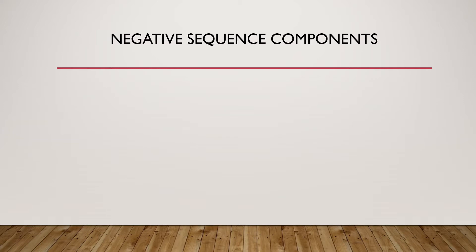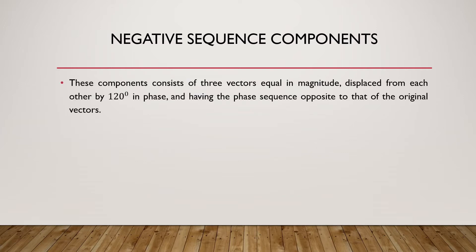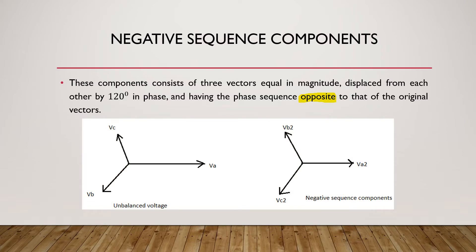Now let us discuss negative sequence components. The only difference between positive and negative sequence is the phase sequence. These components consist of three vectors equal in magnitude, displaced from each other by 120°, but the phase sequence is in the opposite direction of the original vectors.